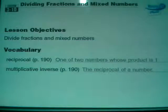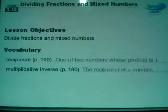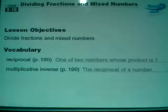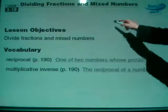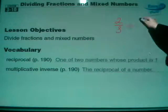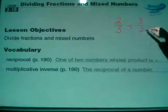Let's go ahead and take a look at the definitions here. Reciprocal - that's one of two numbers whose product is one. Now, some of you are thinking that's not what I think of when I think of reciprocal. When I think of reciprocal, I think about taking a fraction and flipping it. You're right, that is what a reciprocal is. For instance, if the fraction was something like 2 thirds, its reciprocal would be 3 over 2.